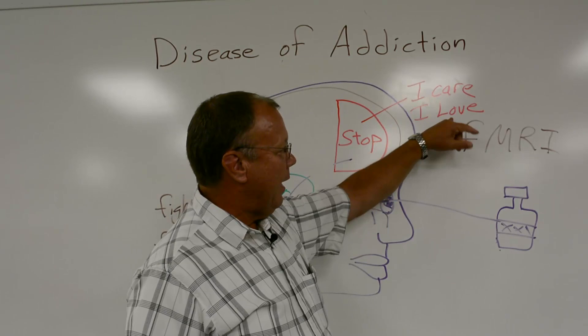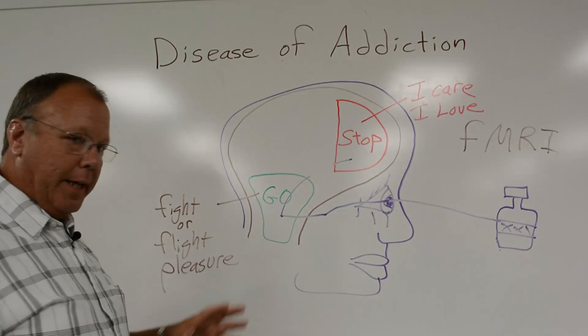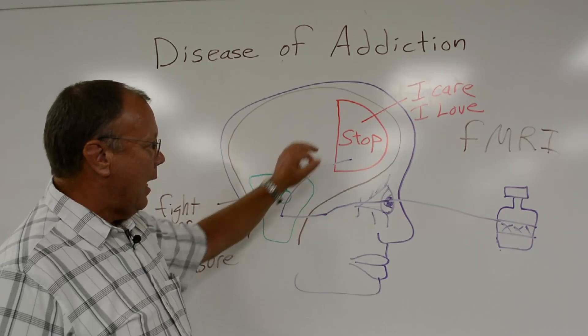The brain disease of addiction happens this way, and they found this out with functional magnetic resonance imaging machines they have nowadays, where they can actually look into a brain as a person is thinking, and the areas they're thinking in light up.